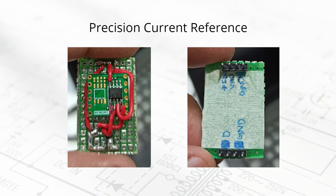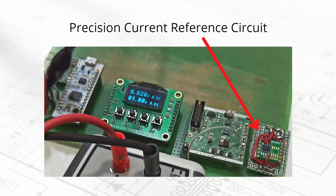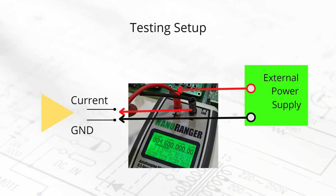I used a small perfboard or zero PCB to build the current reference circuit, using a general-purpose op-amp and N-channel MOSFET available in the lab. This current reference PCB is then mounted on the main PCB for testing. I connected the NanoRanger for current measurement in series — the external power supply positive goes to the NanoRanger positive terminal, then the NanoRanger negative goes to the current reference positive output, and the ground of the current reference and power supply ground are connected directly.